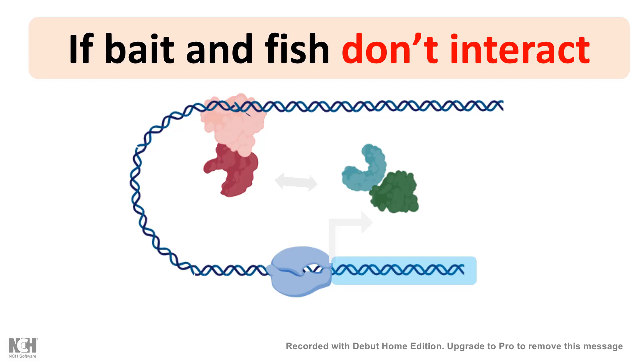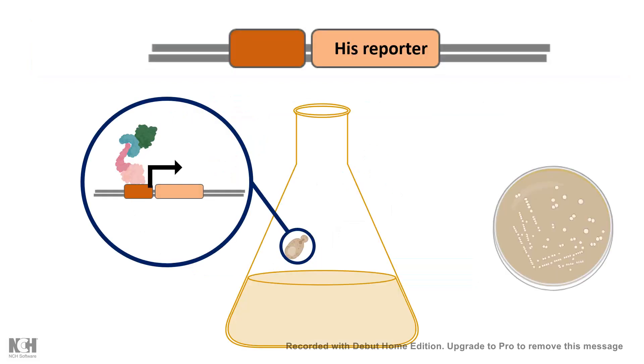It's a simple readout and the reporter gene has to be fairly simple. It could be a metabolic gene, for example the reporter in this case is his reporter, this would give rise to histidine and we would use a yeast strain which cannot metabolize histidine itself and we would grow the yeast in a histidine depleted media so the yeast colony would only grow if these particular bait and fish plasmid interacts and thereby the histidine reporter is produced.